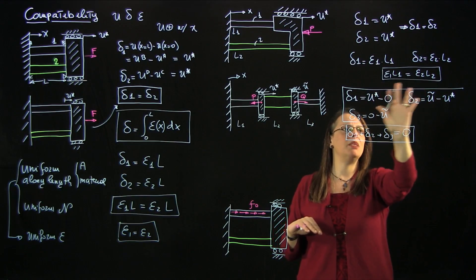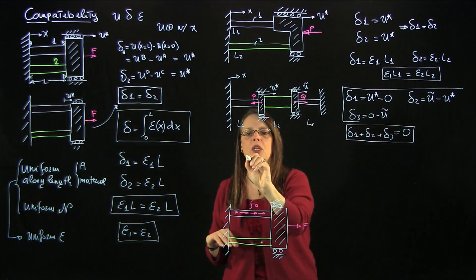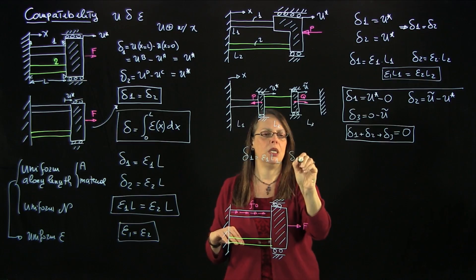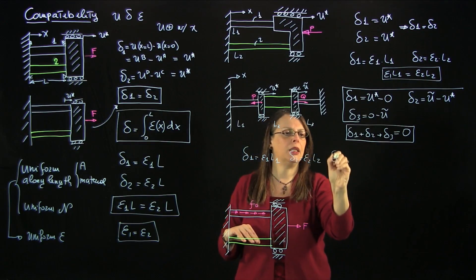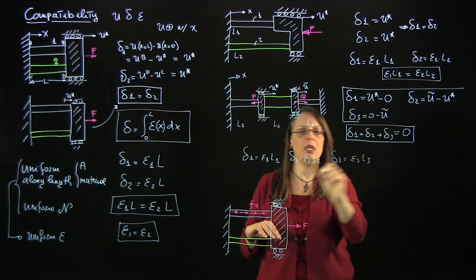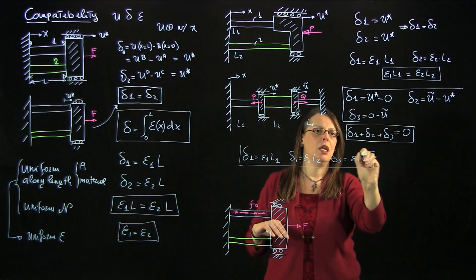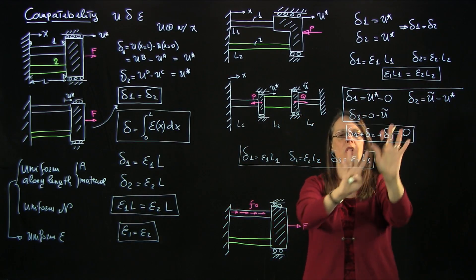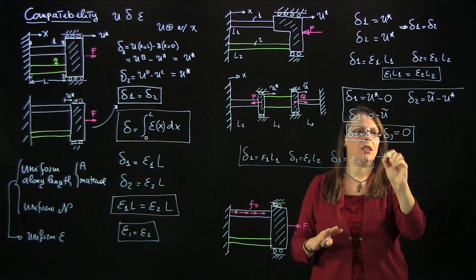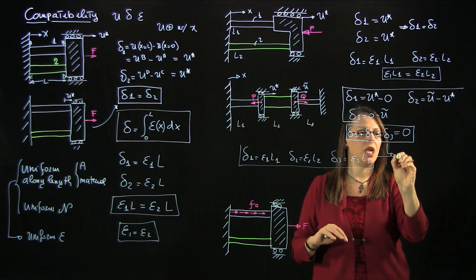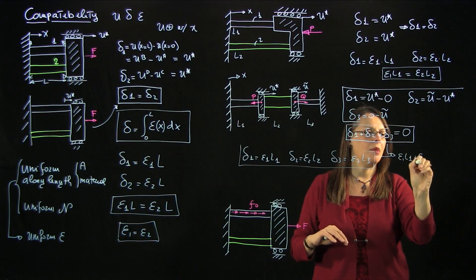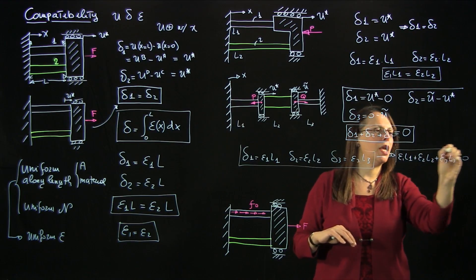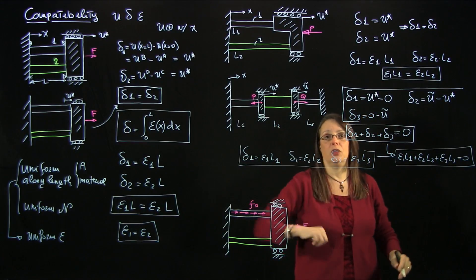If you want the compatibility in terms of strain, you write delta 1 = epsilon_1 * L1, delta 2 = epsilon_2 * L2, delta 3 = epsilon_3 * L3, and substituting gives the equivalent compatibility constraint: epsilon_1 * L1 + epsilon_2 * L2 + epsilon_3 * L3 = 0. That is your compatibility relationship in terms of strains and the lengths of the bars.